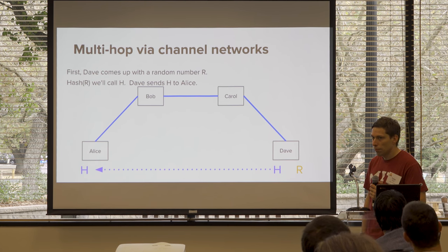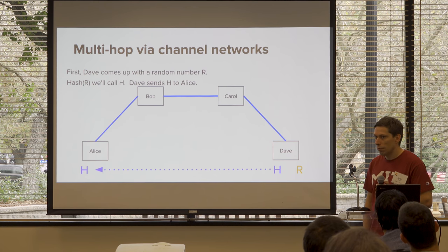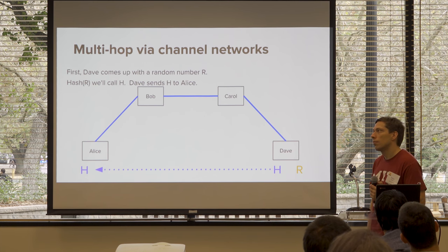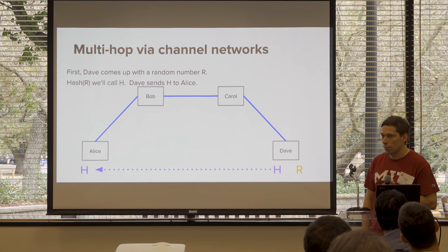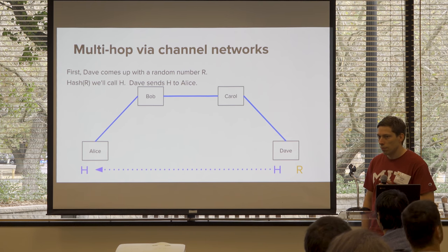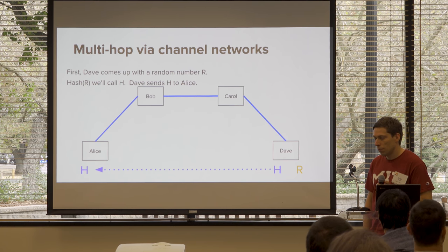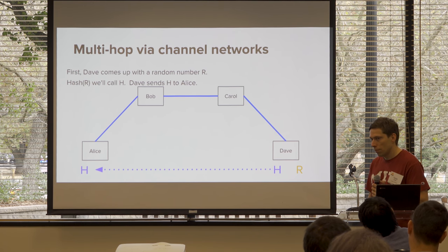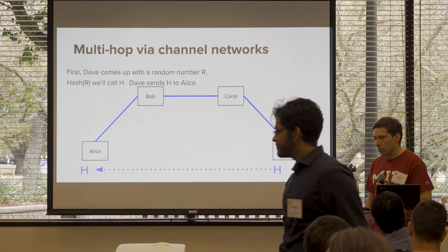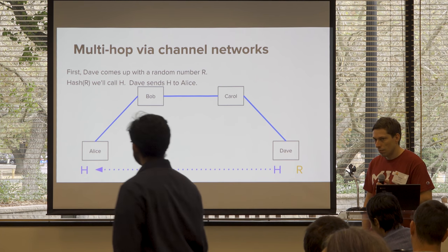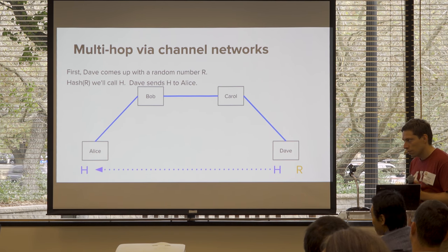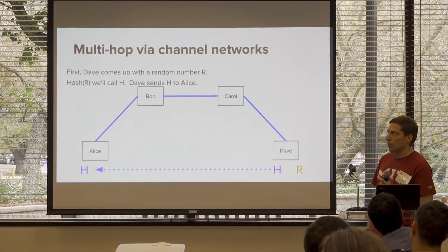A question: what happens if Bob is unavailable once Carol has sent it on the route? And are there risks if someone decides to close the channel and there's a lag before confirmation?